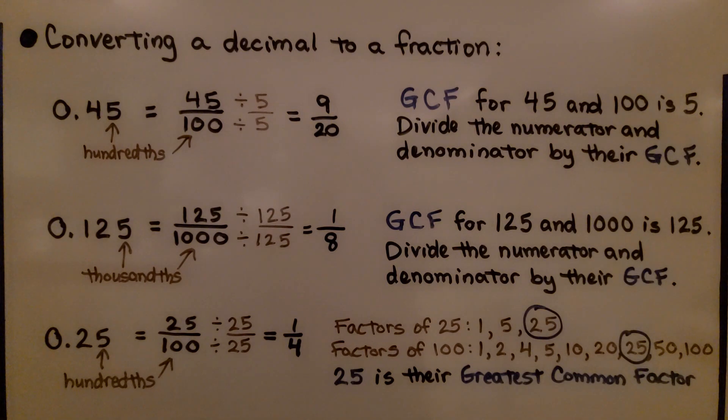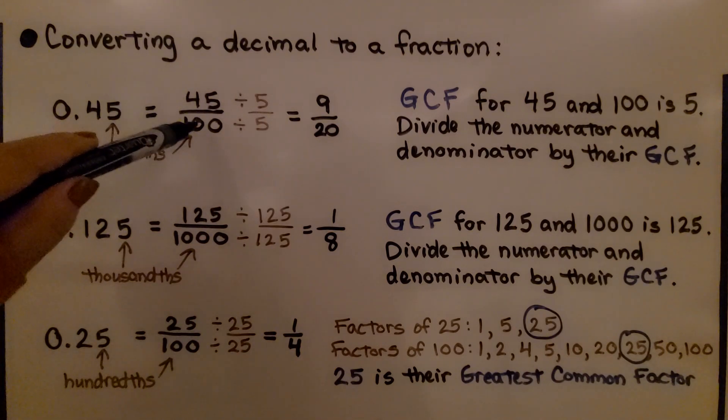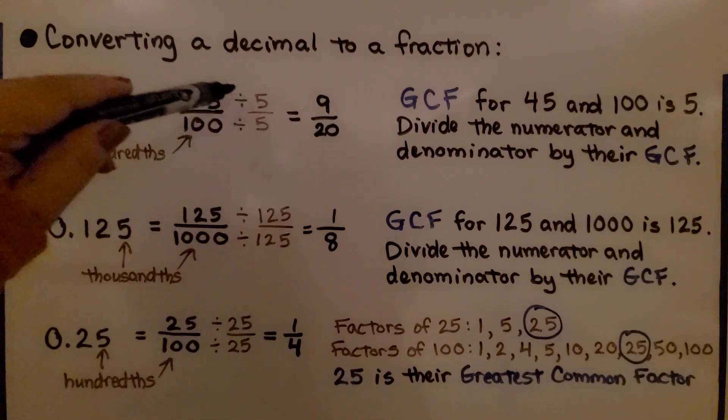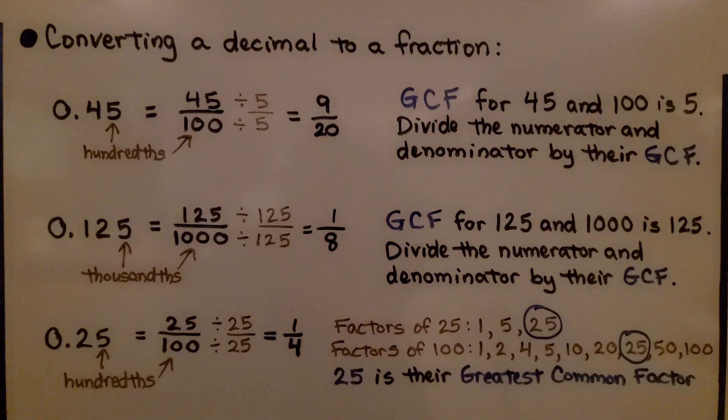For converting a decimal to a fraction, if we have 45 hundredths, we just write the 45 over 100. We find the greatest common factor for 45 and 100, which is 5, and divide the numerator and denominator by that greatest common factor, that GCF. We get 9/20.